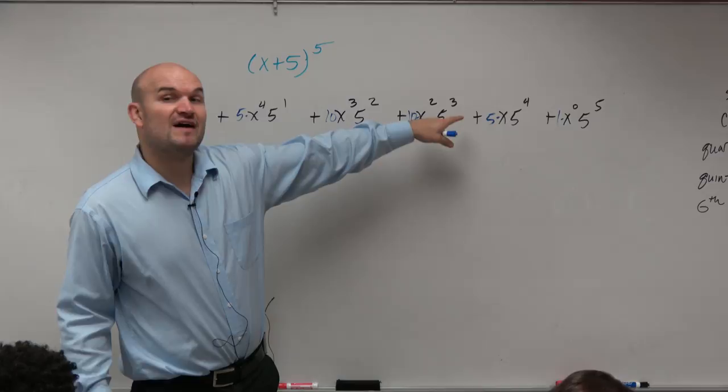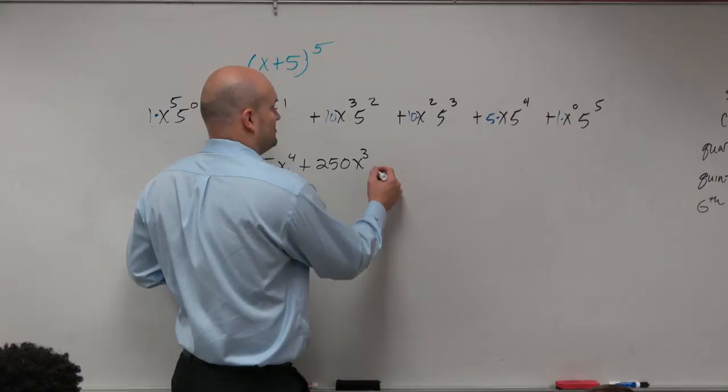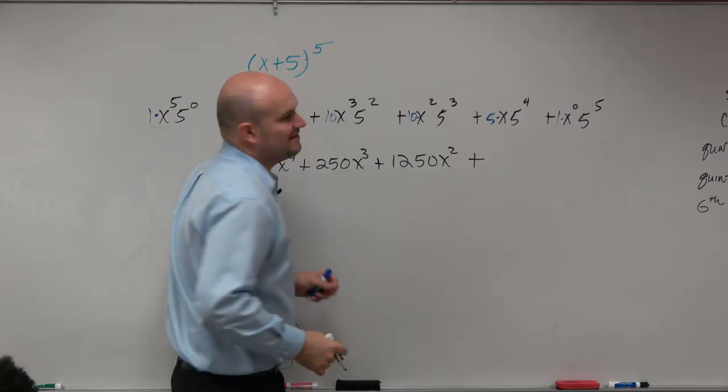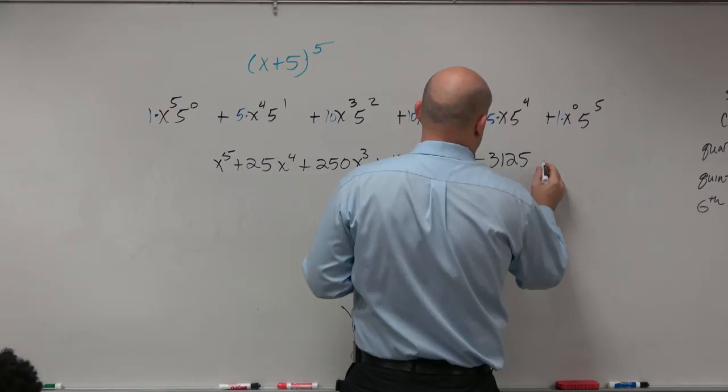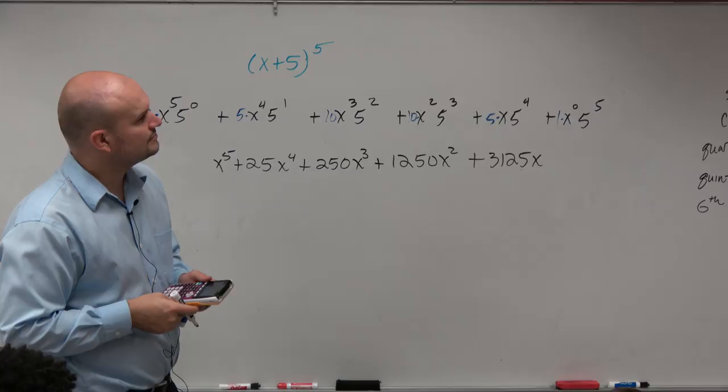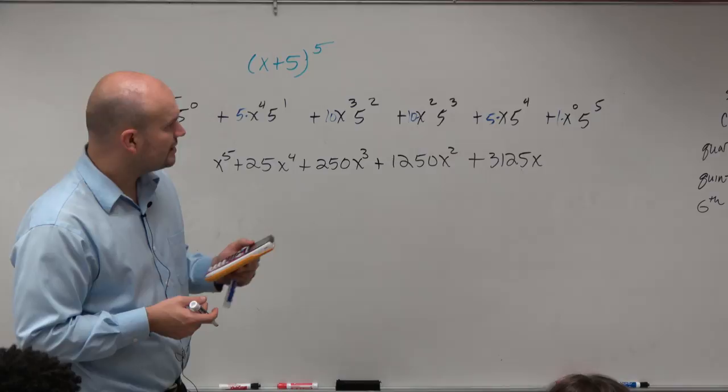Here I have 5 to the third power, which is 125 times 10, which is going to be 125x squared. 5 to the fourth power is going to be 625. And then I'll just need to multiply by 5 one more time, which is 3,125x. And then x to the 0 is just 1, so then it's 5 to the fifth power.